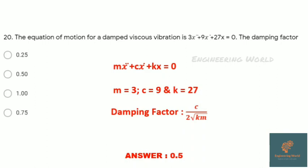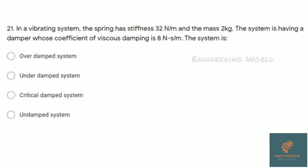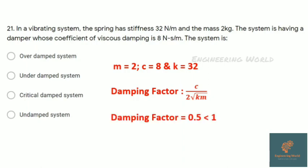In a vibrating system, the spring has stiffness 32 N/m and mass 2 kg. The system has a damper with coefficient of viscous damping 8 Ns/m. The system is? We have to calculate the damping factor first. Damping factor formula is ζ = c/(2√(km)). By putting all values, we get ζ = 0.5. If damping factor is less than 1, it's under damped. If it equals 1, it's critically damped, and if greater than 1, it's over damped. So the answer is under damped system.